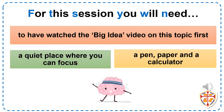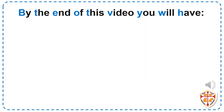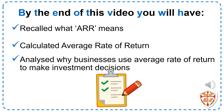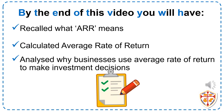For this session you will need to have watched the Big Idea video on this topic first. Before beginning this session, try and find a quiet place where you can focus and aim to have a pen, paper and a calculator to hand so that you can note down your ideas. By the end of this video you will have recalled what ARR means, calculated average rate of return, and analysed why businesses use average rate of return to make investment decisions.